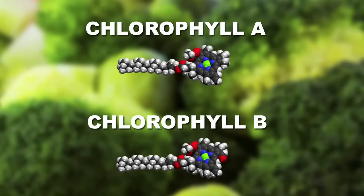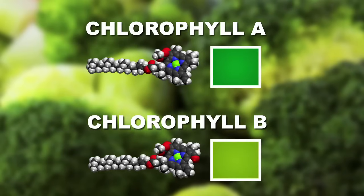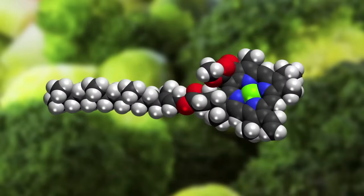Chlorophyll A is responsible for the bright blue green of some veggies, whereas chlorophyll B is responsible for the yellow green. At the center of these two molecules is a magnesium atom, which keeps the veggies a vibrant green.